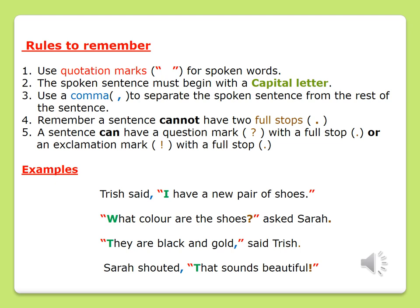Let's try to remember our rules for direct speech. Rule number one: use quotation marks for spoken words. Rule number two: the spoken sentence must begin with a capital letter. Rule number three: use a comma to separate the spoken sentence from the rest of the sentence. Remember, a sentence cannot have two full stops. And rule number five: a sentence can have a question mark with a full stop, or an exclamation mark with a full stop.